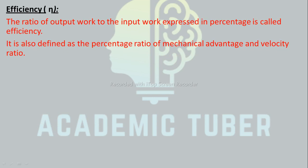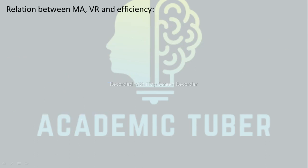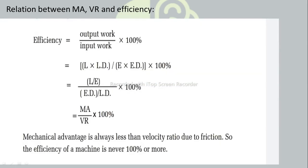Efficiency: the ratio of output work to input work expressed as a percentage is called efficiency. It is also defined as the percentage ratio of mechanical advantage to velocity ratio. Mathematically, efficiency η equals output work divided by input work, multiplied by 100%, or efficiency η equals MA divided by VR, multiplied by 100%. Mechanical advantage is always less than velocity ratio due to friction, so the efficiency of a machine is never 100% or more.